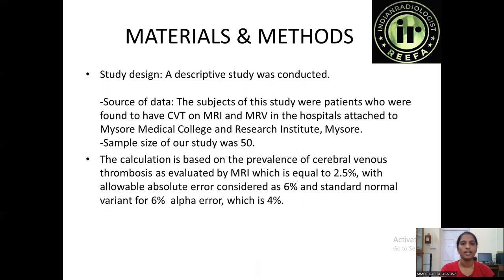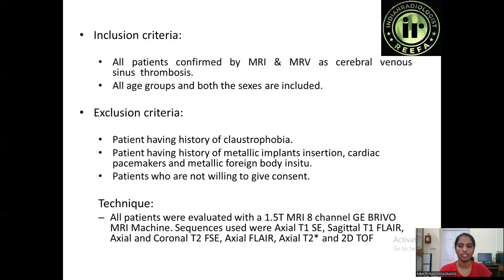Coming to the materials and methods, a descriptive study was conducted. The subjects were patients found to have CVT on MRI and MRV in the hospital attached to Mysore Medical College and Research Institute, Mysore. The sample size calculation is based on the prevalence of cerebral venous thrombosis of 2.5%, with an allowable error of 6% and a standard error of 4%. Inclusion criteria included all age groups and both sexes confirmed by MRI and MRV. Exclusion criteria included claustrophobia, metallic implants, cardiac pacemakers, metallic foreign body in-situ, and patients not willing to give consent.